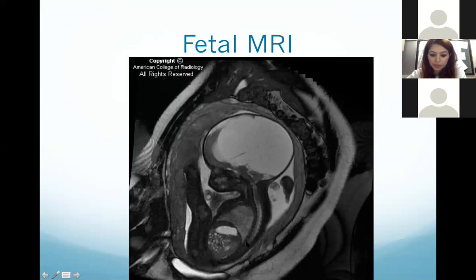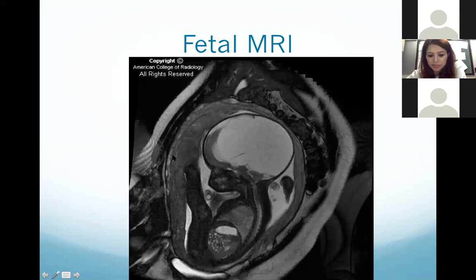On the fetal MRI you can see the spine, lungs, stomach and bowel, and the legs. This fetus is in a breech position. Anteriorly, this gray area is the anteriorly located placenta, and the surrounding rim is the myometrium.